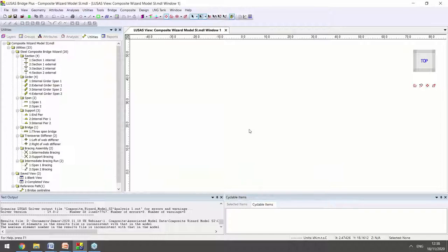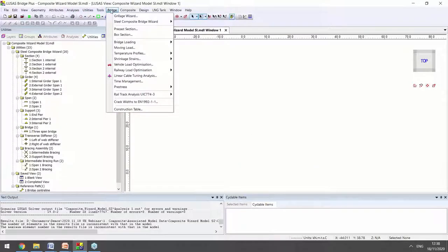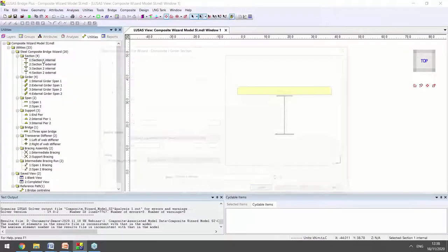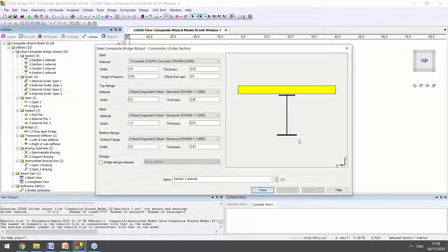There are quite a few inputs required for the wizard through the bridge steel composite bridge wizard menu but for the purposes of this demo I've predefined them. So first thing you need to define is your cross section definition. So what your dimensions of your steel girder are and what material is being used and the same for your concrete slab.